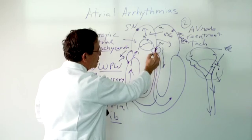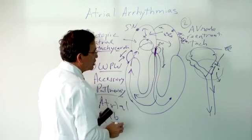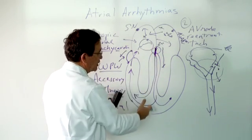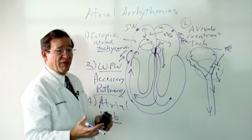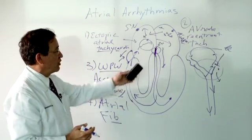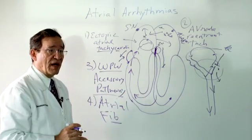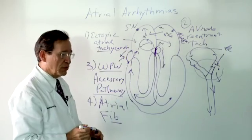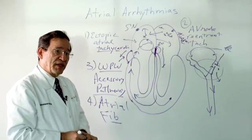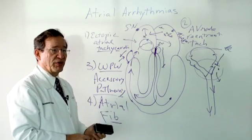Depending on how slick this bridge is, the number of impulses getting through may be faster or slower, and everybody's electrical bridge is a little different in terms of how well they allow these impulses to get through. And that covers pretty much all of the atrial arrhythmias.